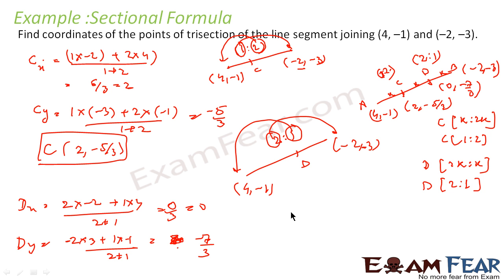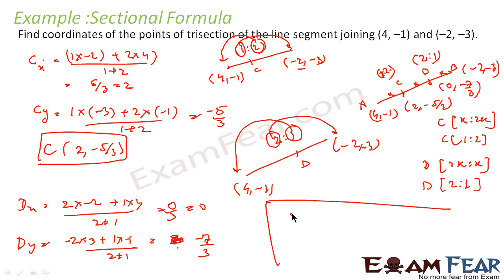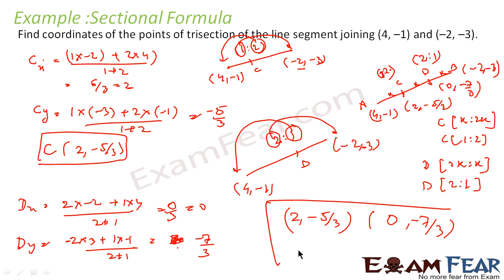Therefore, the two trisection points are C = (2, -5/3) and D = (0, -7/3). That is the answer.